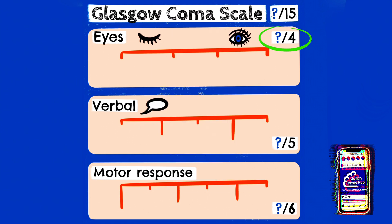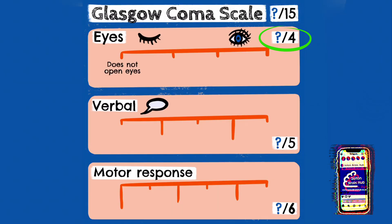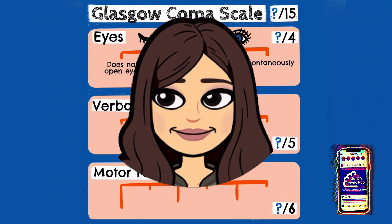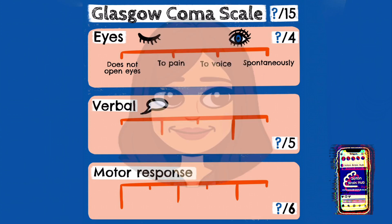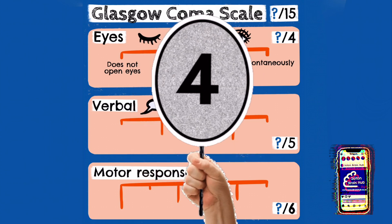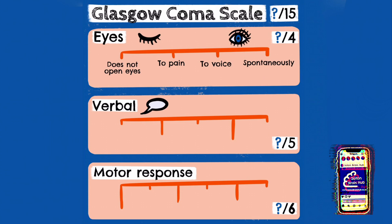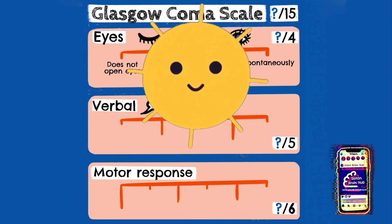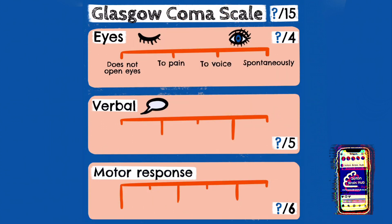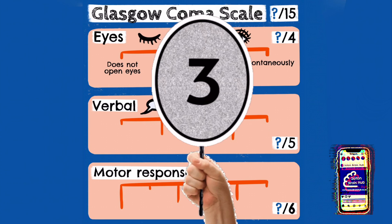Eye movements are scored out of 4. If the eyes open spontaneously — so you walk in and the patient is looking at you and the eyes can follow objects around the room — that is 4 points. If they don't, you speak to the patient, saying good morning or asking them a question. If they open their eyes to your voice, that is 3 points.